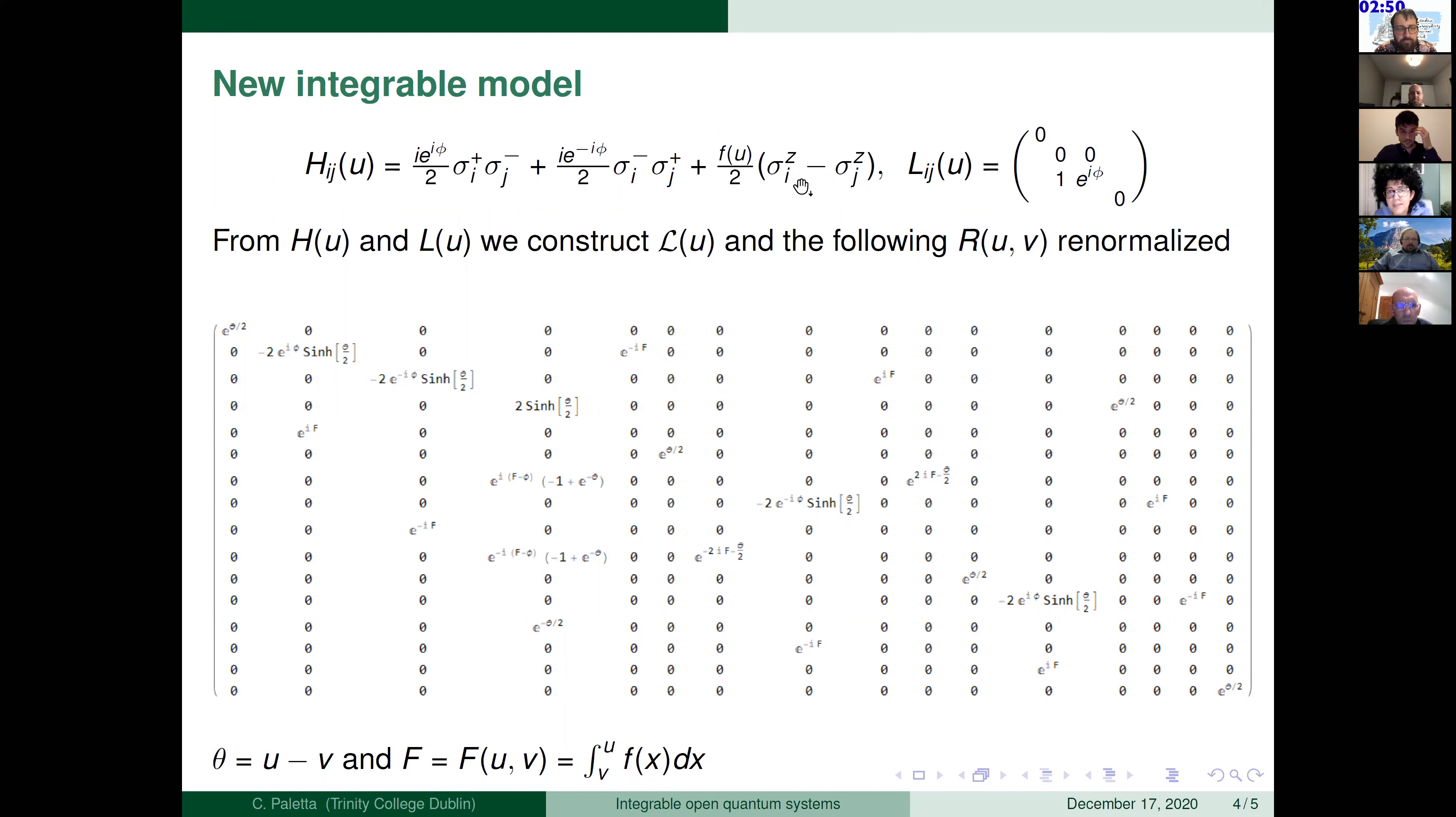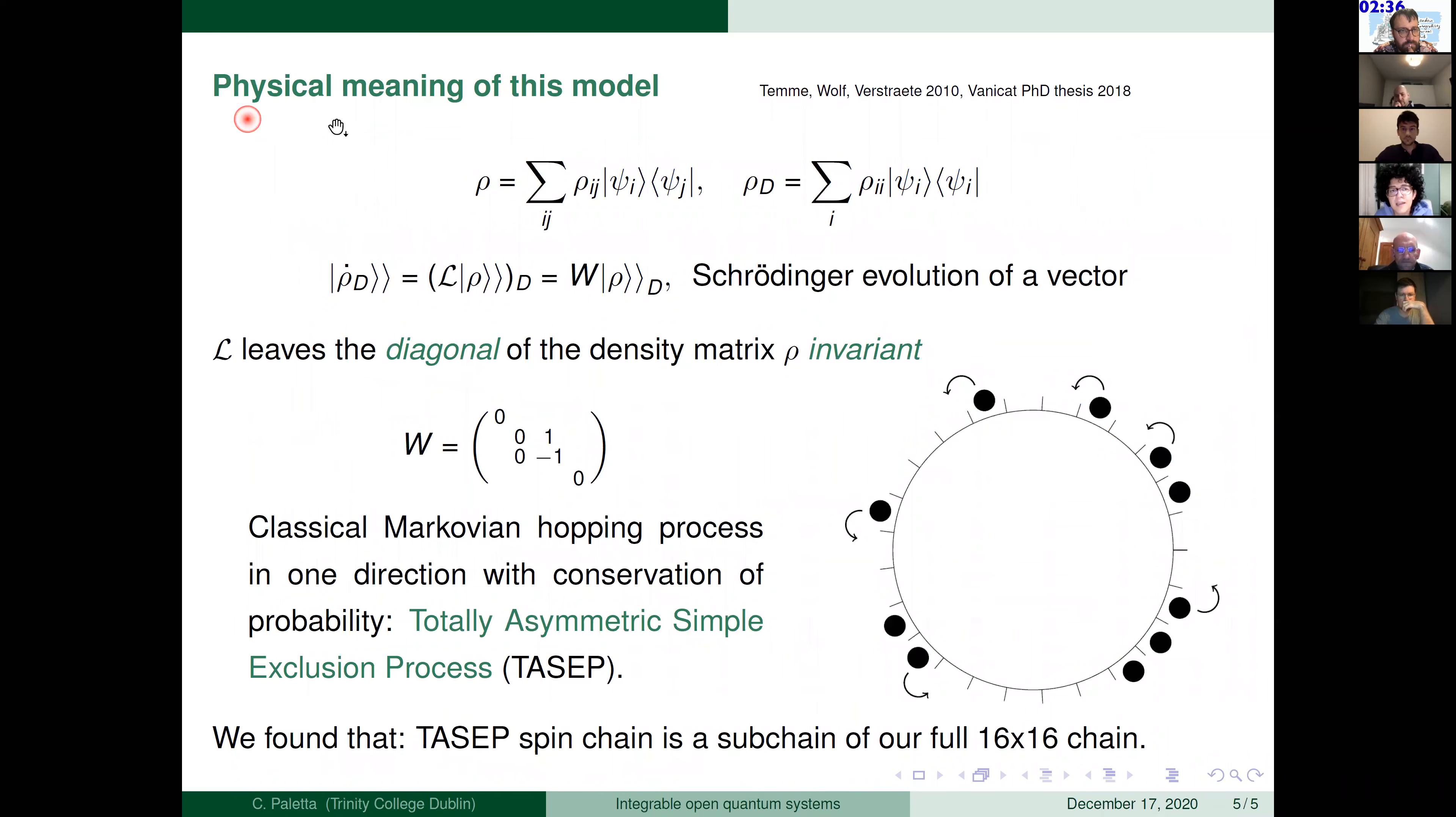This model is interesting also because it has a physical meaning. In particular, if we were working on the Hilbert space, this was the expression of ρ as a matrix. And this one was just the diagonal of this density matrix. But as I said, it will be nice to write the Liouville equation in a form similar to the Schrödinger equation. So we used the super operator formalism. To do that, ρ became a vector. So we can make the super operator act on this vector.